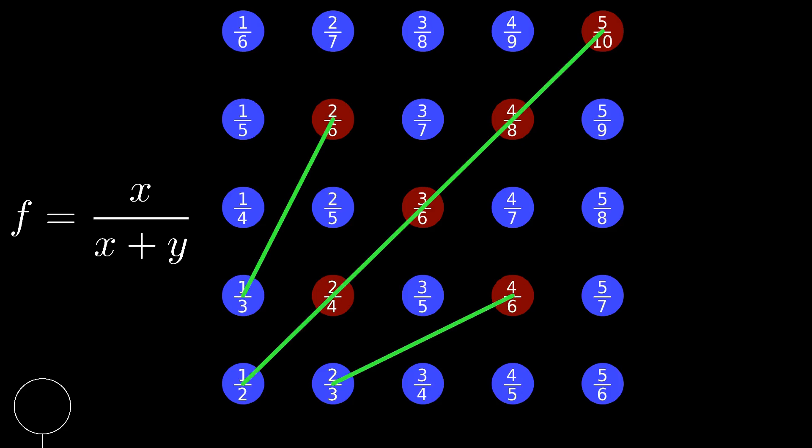For example, the tree that represents the fraction two fourths is blocked by one half, and the tree that represents two sixths is blocked by one third.